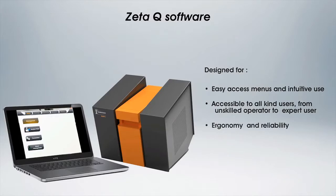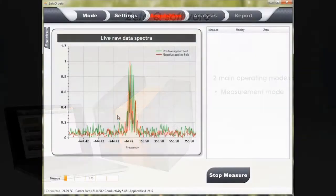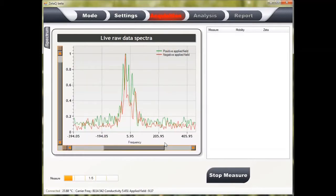Zeta-Q proposes two main operating modes. The measurement mode allows starting a measurement in few clicks, either in a continuous way or in a multi-acquisition session for size kinetic study.